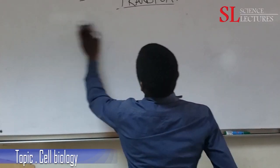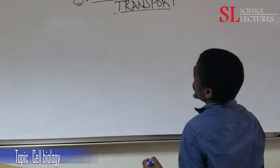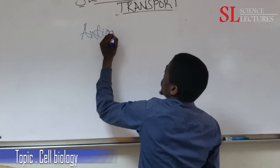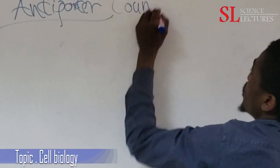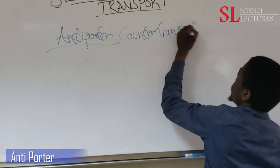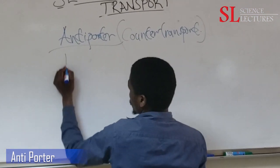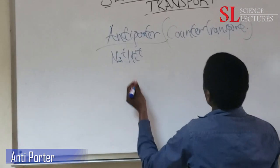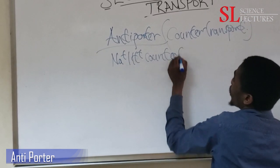Our third example is an antiporter: the sodium-hydrogen counter-transport. In this system, molecules are transported in opposite directions — sodium ions move in one direction while hydrogen ions move in the opposite direction.